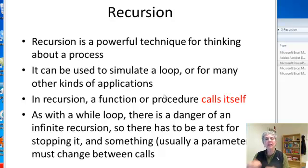The basic idea of recursion is that a function or procedure calls itself. Now, as with a while loop, there's a danger of an infinite recursion. So there has to be something, some kind of test for stopping it. And something like a parameter of the function or procedure has to change between calls.